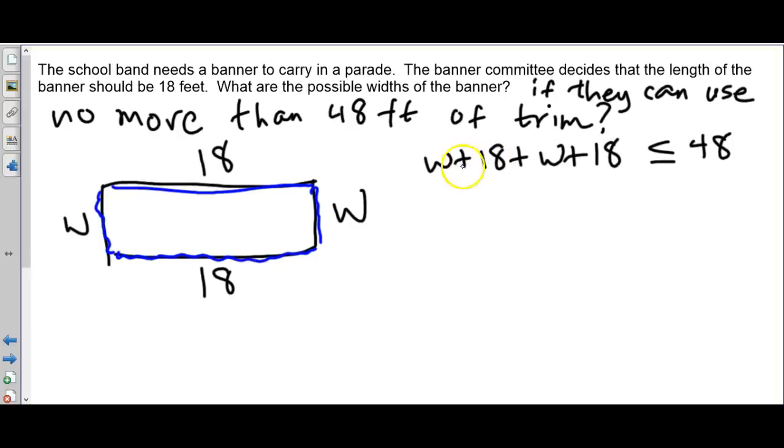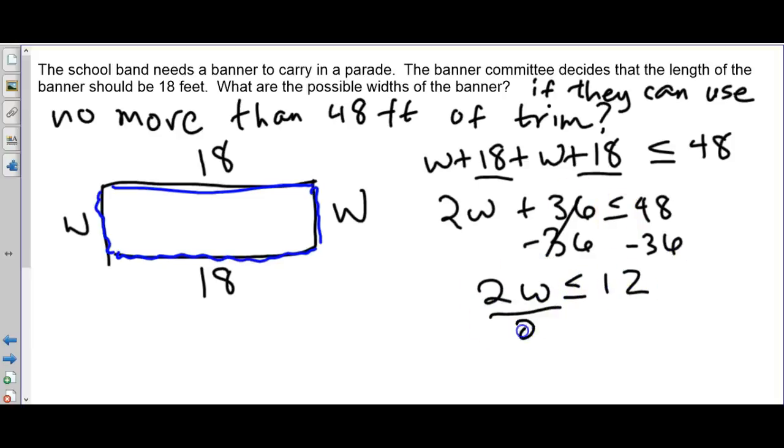So now here we have to combine some like terms. We have two W's so that adds together to be 2W. 18 plus 18 is 36. And now we just have our two-step equation that we solve. So we minus 36 from both sides, giving us 12, and divide both sides by 2. So W is less than or equal to 6. So the banner's width has to be 6 feet or less.